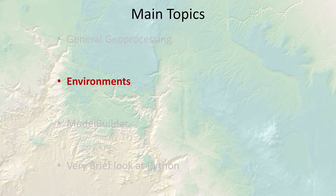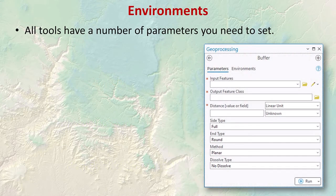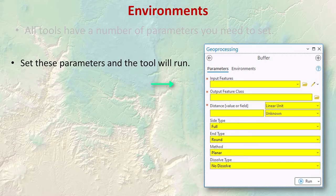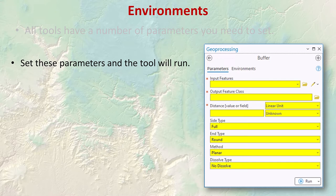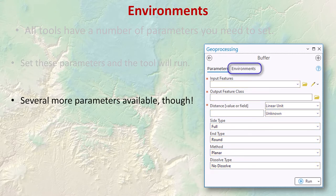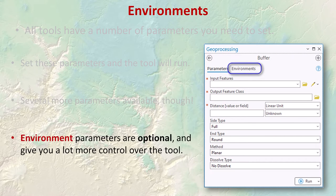Whenever you run a tool in ArcGIS Pro, you have to tell the tool a few things — these are referred to as parameters. For example, when you run the buffer tool you specify parameters for the input feature class, output feature class, distance, units, buffer shape types, whether to use geodesic or planar distances, and whether to dissolve. However, there are several more parameters that ArcGIS can use that are not revealed in the tool dialog — these are called environments.